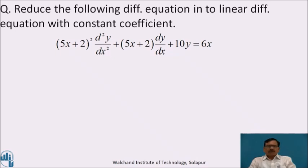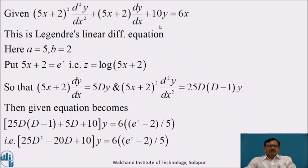I hope you have completed. The given equation is (5x + 2)² d²y/dx² + (5x + 2) dy/dx + 10y = 6x. This is a Legendre's linear differential equation. Comparing with Legendre's equation, here a = 5 and b = 2. Put 5x + 2 = e^z, that is z = log(5x + 2).